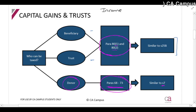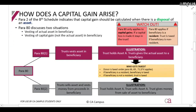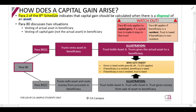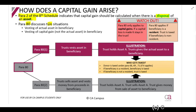So how does a capital gain arise? Paragraph 2 of the eighth schedule tells us to consider capital gains when there is a disposal of an asset — for example, selling or donating an asset. Paragraph 80 actually discusses two situations: the first is when there is a vesting of an asset in a beneficiary, and the second is when the capital gain of an asset that has been disposed of vests in the beneficiary.